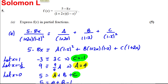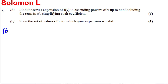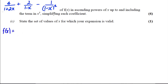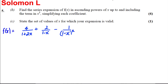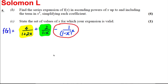Now for part b, we want to find the series expansion of f(x). We know from part a that f(x) equals those three partial fractions. We're going to expand each one binomially, add the results together, and collect like terms. It's very important to keep the working for each expansion separate.